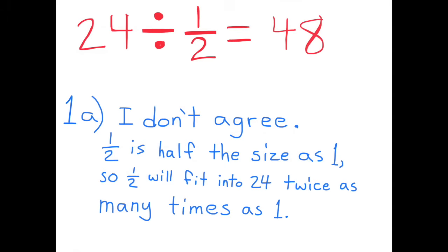I don't agree. A half is half the size of 1, so a half will fit into 24 twice as many times as 1. 24 divided by 1 half equals 48. Since 24 divided by 1 is 24, 24 divided by a half is 48.